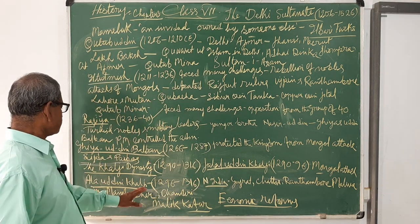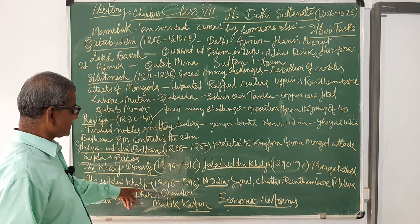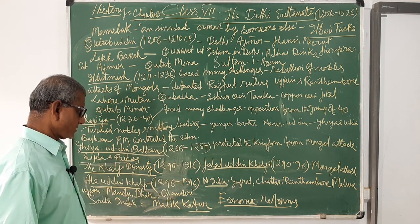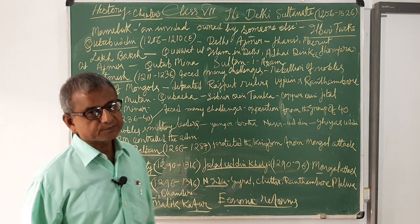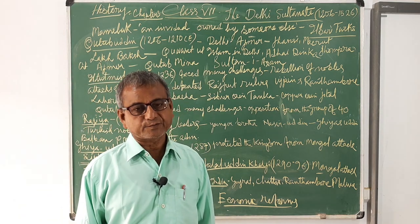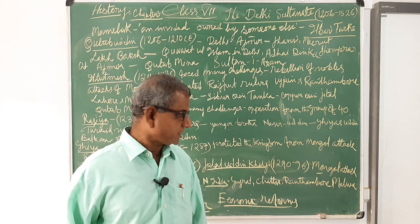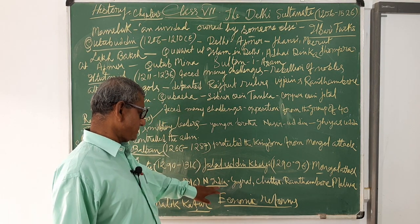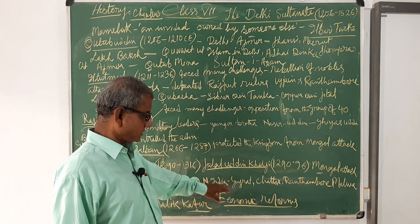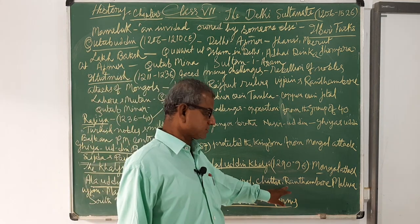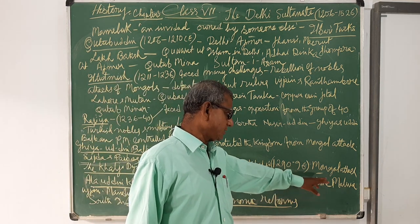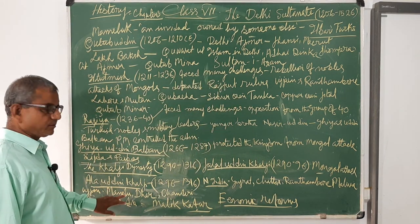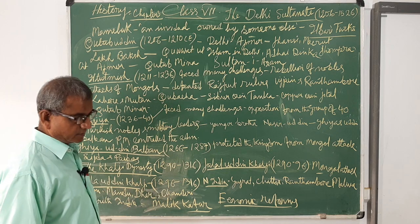After the death of Jalaluddin Khalji, Alauddin Khalji came to the throne and ruled from 1296 to 1316. He was one of the greatest and most powerful rulers. He captured many kingdoms of northern India — Gujarat, Chittor in Rajasthan, Ranthambhor, Malwa, Ujjain, Mandu, Dhar, and Chanderi.